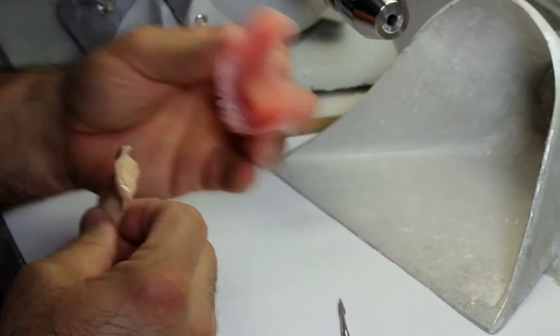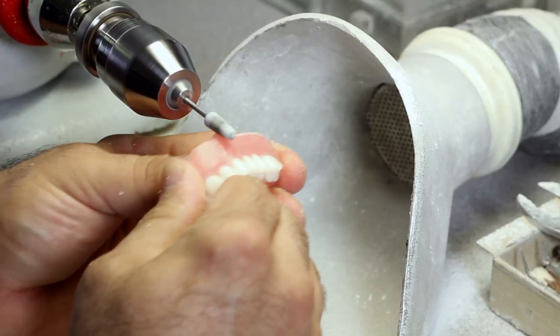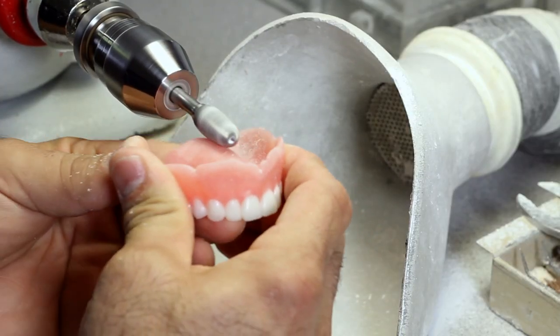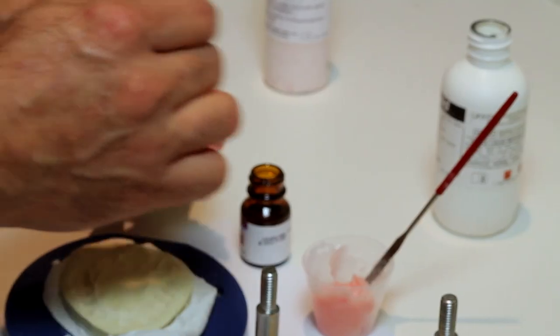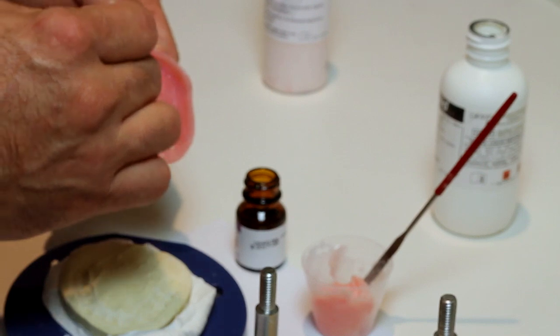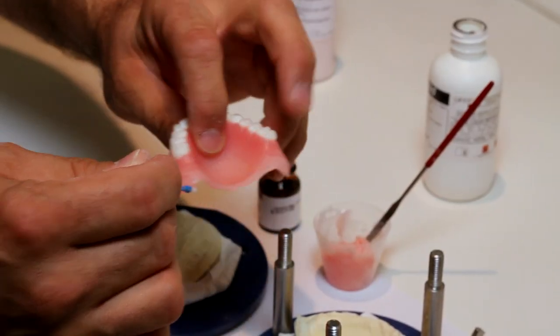Grind out the impression material and some of the existing denture base material for better adhesion of the fresh material to the working denture. Clean the denture and coat the prepared surface of the denture with Lange's acrylic primer.